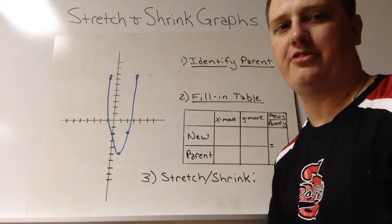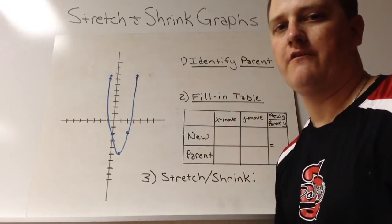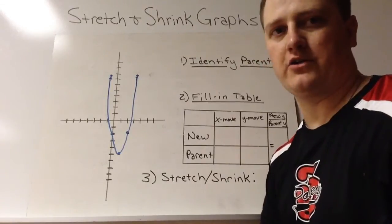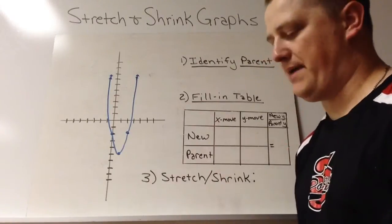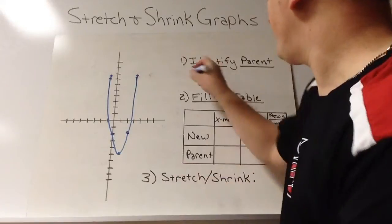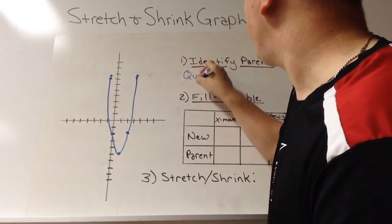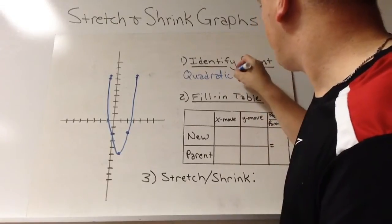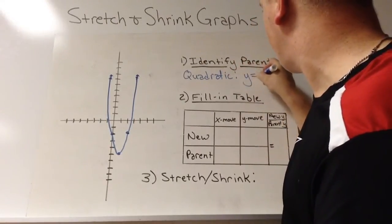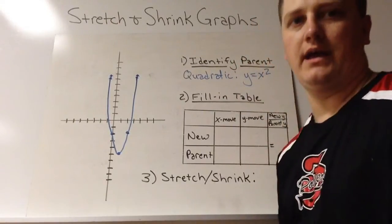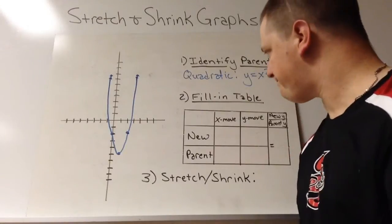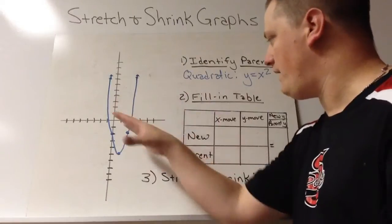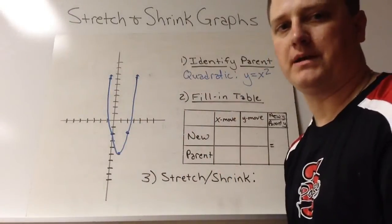I basically have a three-step process for doing this. That three-step process starts pretty simple. Identify the parent. So for this one, say quadratic, meaning I have a parent of y equals x squared. It's important that you know the equation because we're not going to graph the parent. We're just going to go with the equation to help us.